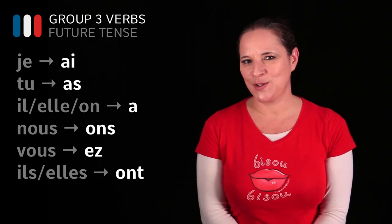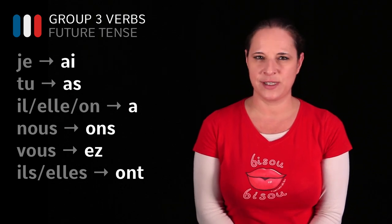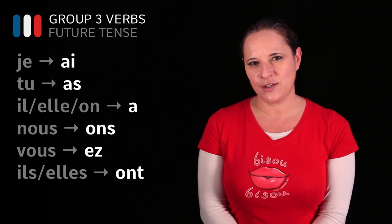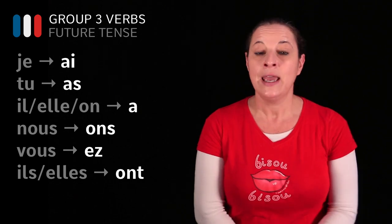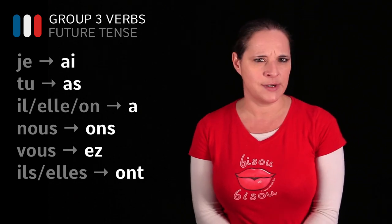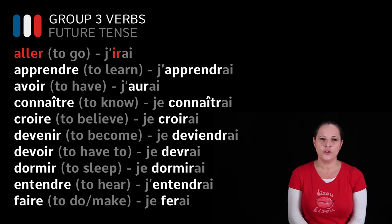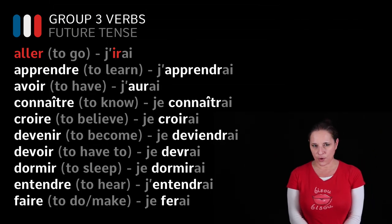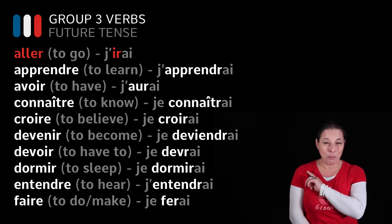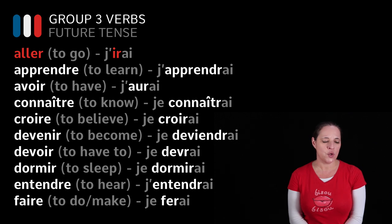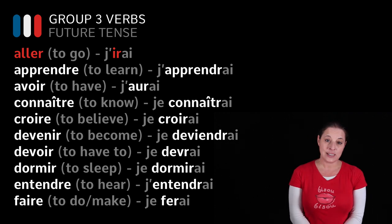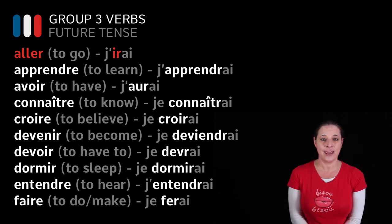So what I would like you to have a look at now is the list of verbs that I have prepared for you. We are going to look at what they look like when conjugated in the first person, JE. Does it look the same or does it look really different? For ALLER, to go, when you want to say 'I will go,' it is J'IRAI. Have a look — completely different stem. It's not ALLER but IR. This kind of stem you need to learn by heart if you want to conjugate in the future tense, especially the third group verbs, which are the highly irregular verbs.